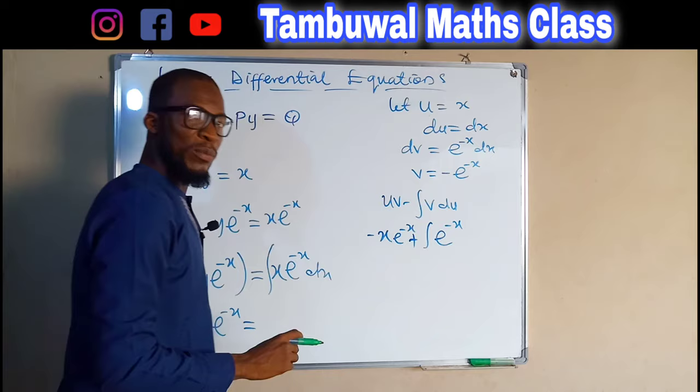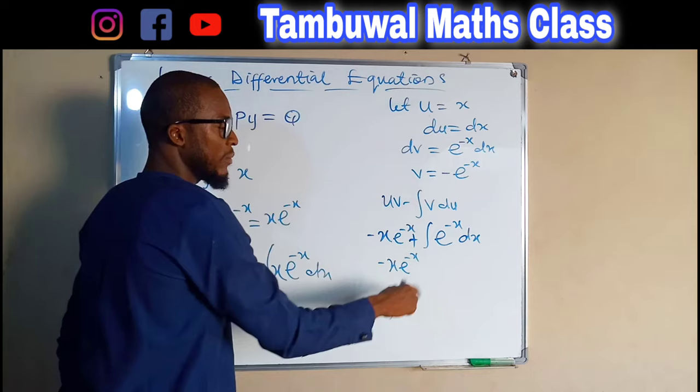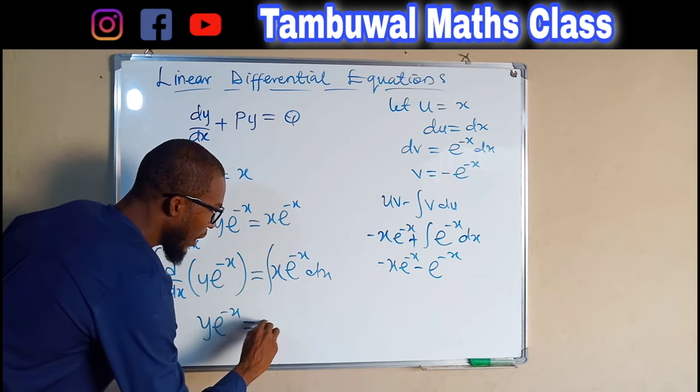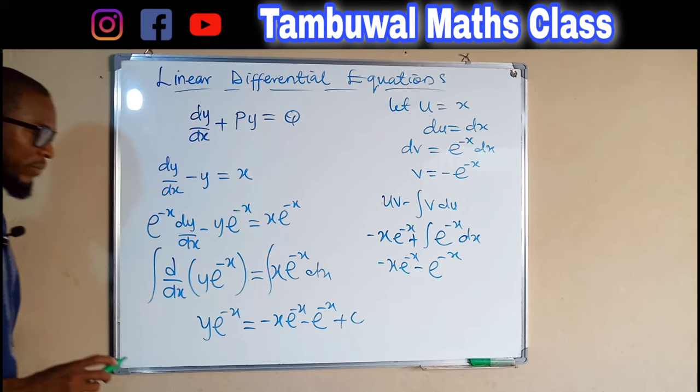Substituting into the formula uv - ∫v du: our u is x, our v is -e^(-x), so we have -x · e^(-x) minus the integral of v · du. Since v = -e^(-x), the negative comes out making this positive, and du = dx. Integrating e^(-x) gives -e^(-x), so the result is -x · e^(-x) - e^(-x) + C.